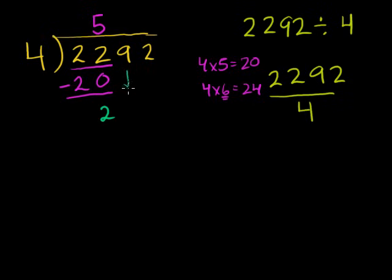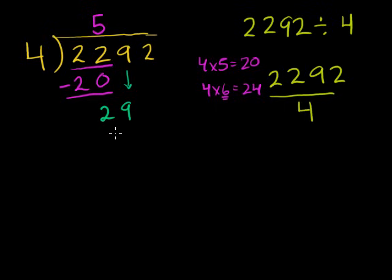And then you bring down this 9. You saw in the last video exactly what this means. When you wrote this 5 up here, notice we wrote it in the hundreds place, so this is really a 500. But in this video I'm just going to focus more on the process, and you can think more about what it actually means in terms of where I'm writing the numbers. I think the process is going to be crystal clear, hopefully, by the end of this video.